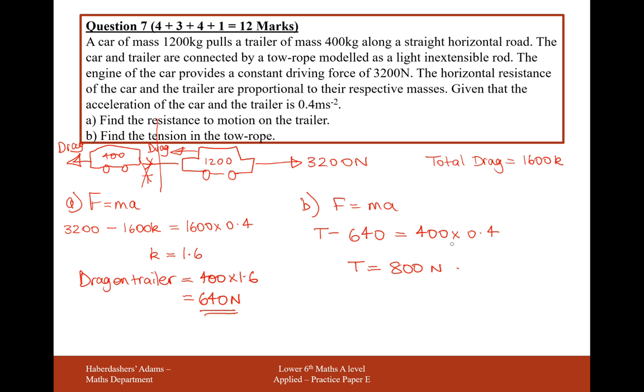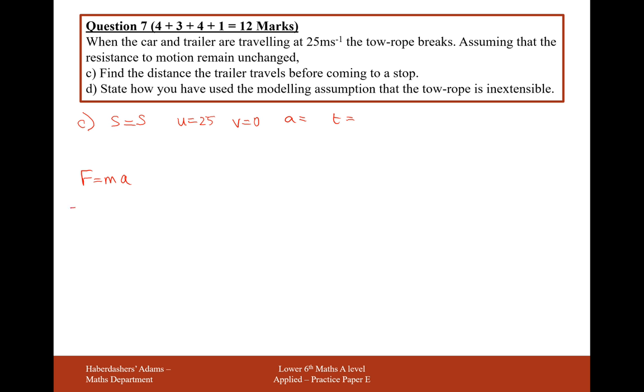No force taking it forwards equals 400 times a. So we're going to get here minus 640 from the drag on the trailer equals the mass of the trailer, 400 times a. And in this case, 640 divided by 400 will give us minus 1.6 equals a.